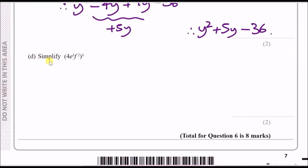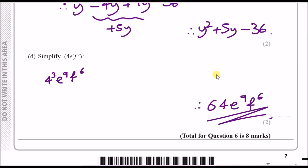Part d: simplify (4e³f²)³. Apply the power of 3 to each term: 4³ = 64, e to the power 3×3 = e⁹, f to the power 2×3 = f⁶. Final answer: 64e⁹f⁶.